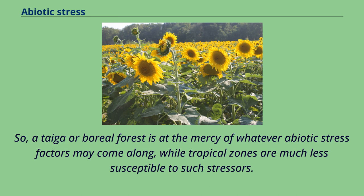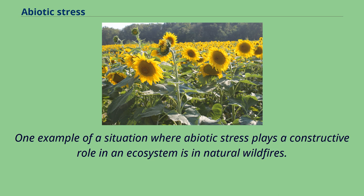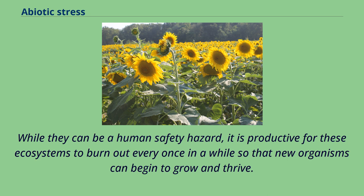A taiga or boreal forest is at the mercy of whatever abiotic stress factors may come along, while tropical zones are much less susceptible to such stressors. One example of a situation where abiotic stress plays a constructive role in an ecosystem is in natural wildfires. While they can be a human safety hazard, it is productive for these ecosystems to burn out every once in a while so that new organisms can begin to grow and thrive.